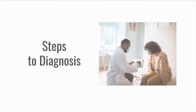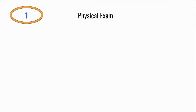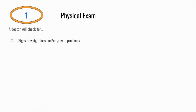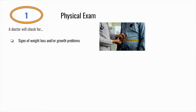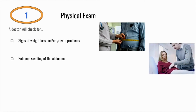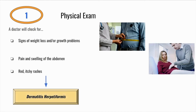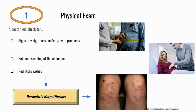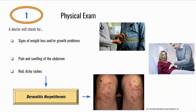A few diagnostic stages must be completed to verify celiac disease. First, a doctor will perform a physical examination, checking for signs of weight loss and growth problems that may arise from malnutrition or malabsorption, and checking the abdomen for pain and swelling around the small intestine. One very common sign is a red itchy rash called dermatitis herpetiformis — an allergic reaction to gluten that manifests in the skin. The rash presents on the elbows, knees, back, and scalp, and about 10 to 20 percent of adults with celiac exhibit this rash, sometimes as their only symptom.